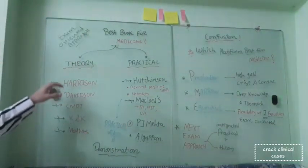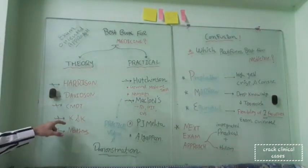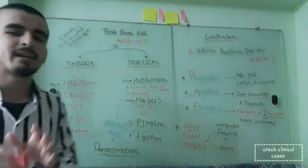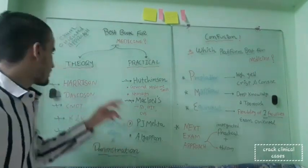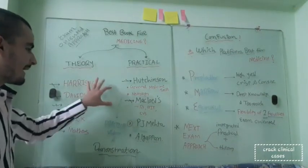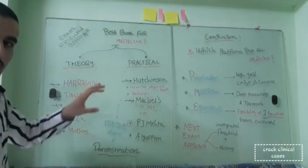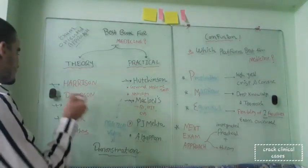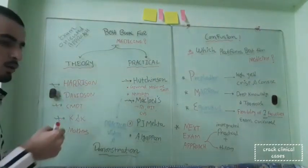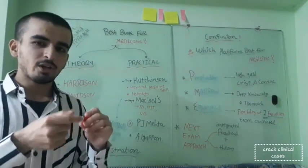Theory options are Harrison, Davidson, CMDT, Kumar and Clark, and Matthews. Harrison is the gold standard as I told you, but choose wisely as per your convenience. You can choose any of them - they're quite good books and questions are directly coming from these books. My recommendation is go with Davidson because Davidson is easy to understand for your university as well as for your entrance exams.